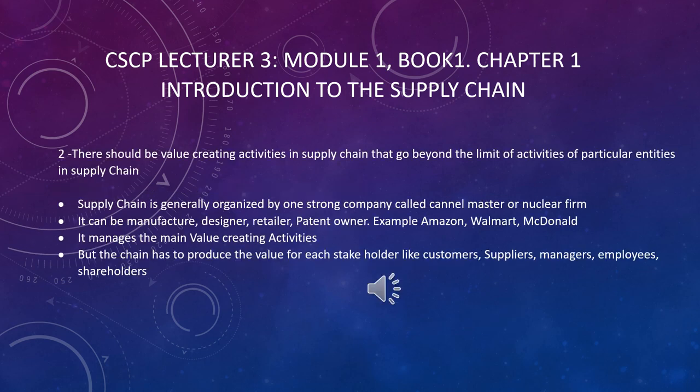The next point is about the channel master, or nucleus firm — the main firm that controls the supply chain activities. It can be McDonald's, it can be Walmart. These are the hubs of supply chain activities, like a manufacturer such as Toyota or General Motors. All the supply chain activities revolve around them.